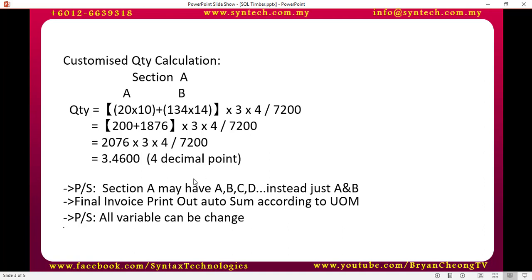It can have A, B, C, D — meaning it can have 20 multiplied by 10, then 134 multiplied by 14, then 30 multiplied by 12 — that would be section C. So everything calculates and you get a final answer of 3.4600. We put it as 4 decimal points, and this is the quantity.